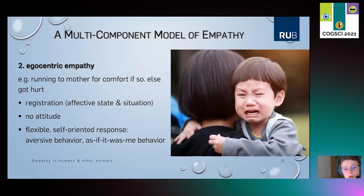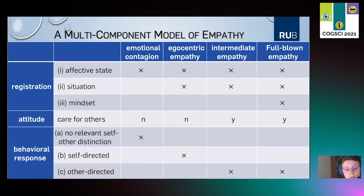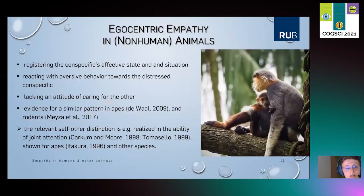Now I would like to introduce the second form of our multi-component model of empathy: egocentric empathy. An example is seeking comfort with the caregiver as a reaction to perceiving someone else in distress. The subject now registers the affective state and also the situation of the other, but it still lacks an attitude to care for the other. So the response, although it is now more flexible than in emotional contagion, remains self-oriented, as shown by aversive behavior and so-called 'as if it was me' behavior. In the second column, egocentric empathy implements the registering of the affective state and also the registering of the situation of the other, but care for others is still lacking, leading to a self-directed response. Evidence for this pattern has been shown for apes and also for rodents.